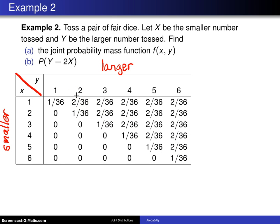You can think of this in the following fashion. If x and y were simply the number, let's just say, on the red die and y was the number on the green die, then you'd have 1/36 everywhere. But because this is the smaller and this is the larger,